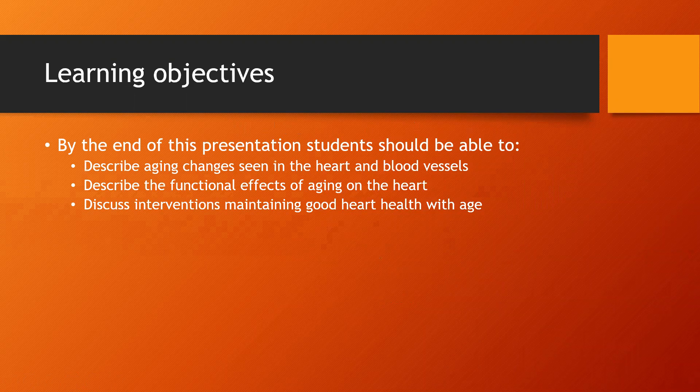By the end of this presentation, we should be able to describe aging changes that are evident on the structures in the cardiovascular system — so that's the heart itself and the vasculature. We should also be able to describe some of the functional effects brought about as a result of those changes, and talk about some of the interventions associated with maintaining good heart health.